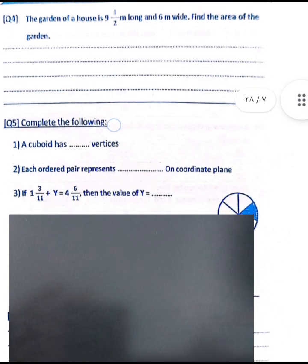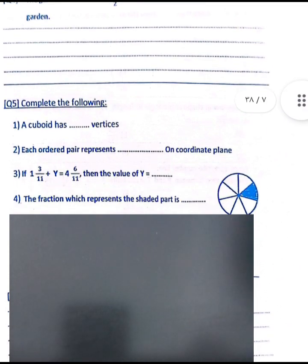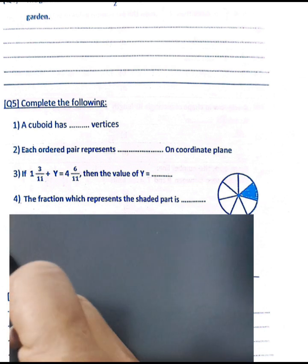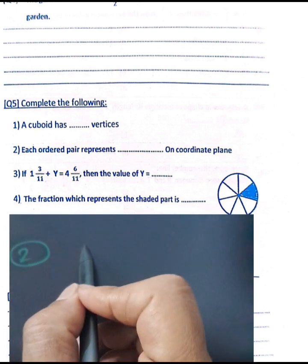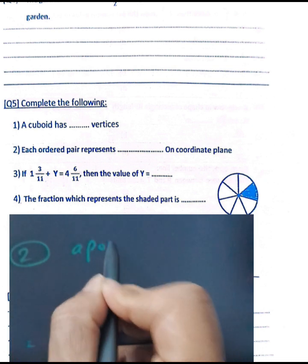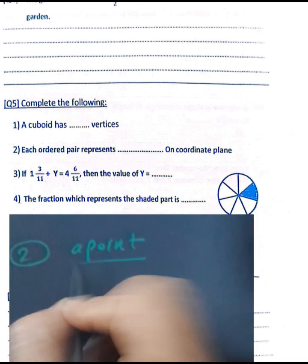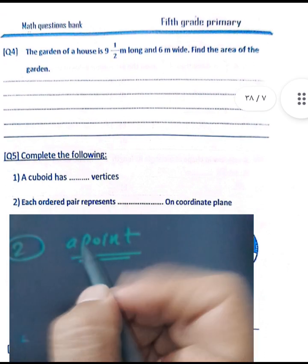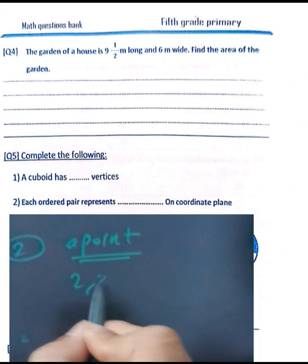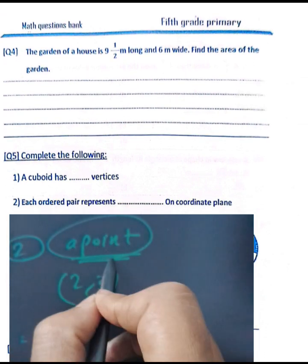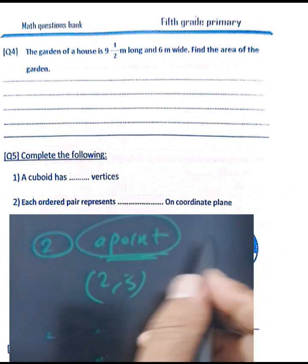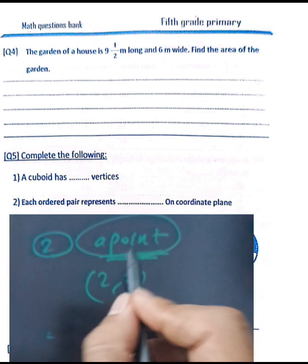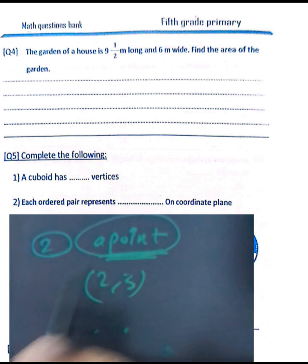Question number two: each ordered pair represents a point on the coordinate plane. For example, the point (2, 3) is called a point on the coordinate plane.